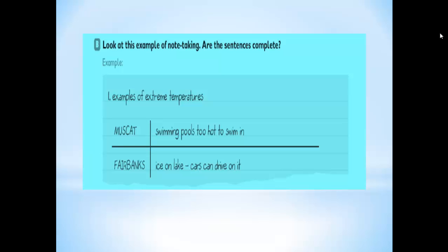As you have noticed there is no verb 'to be' here, there are no articles in this sentence. The same thing is applied to the second sentence: Fairbanks—ice on lake, cars can drive on it. Here also we don't have articles. If we want to take notes we just write down the main words; we don't write down any articles.